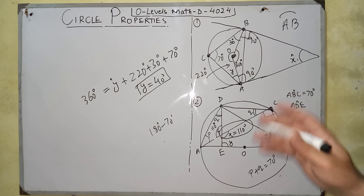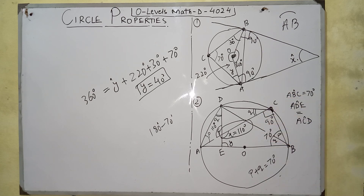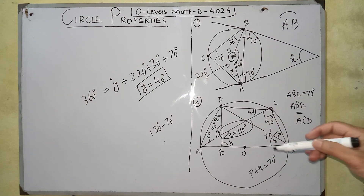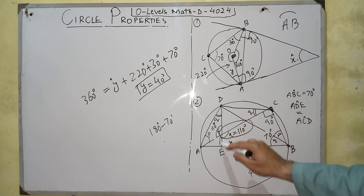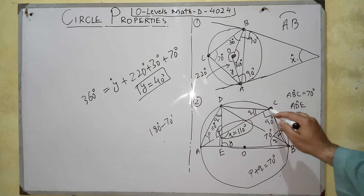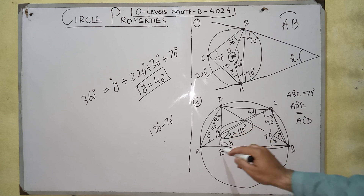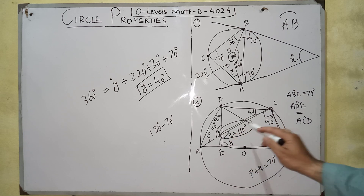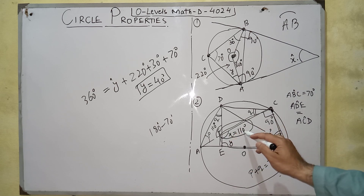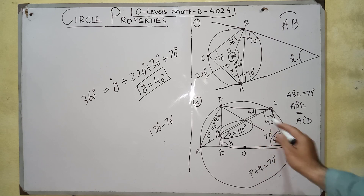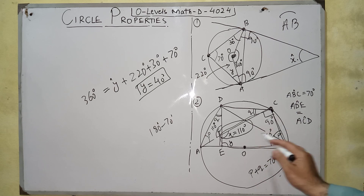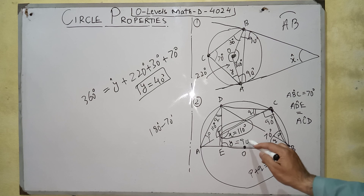To find angle Y, we use the quadrilateral formed by the intersecting chords. The three known angles are 110 degrees, 90 degrees, and 70 degrees. Subtracting these from 360 gives angle Y equals 90 degrees.